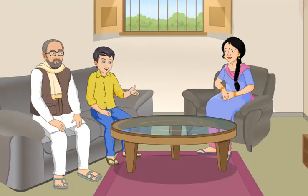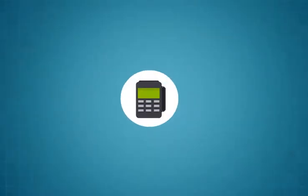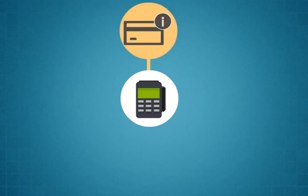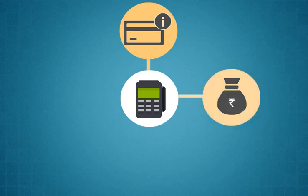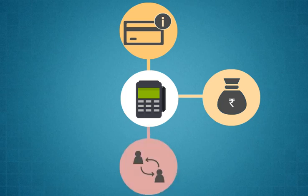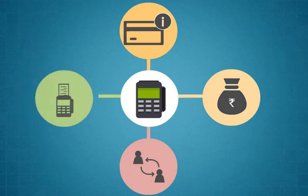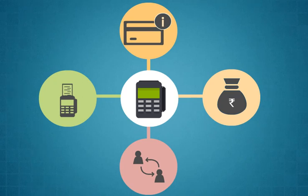Point of Sale (POS) machine is an electronic device used to process card payments at retail locations. A POS generally reads the information of a customer's credit or debit card, checks whether the funds in the customer's bank account are sufficient, transfers the funds from the customer's account to the seller's account, and records the transaction and prints a receipt.